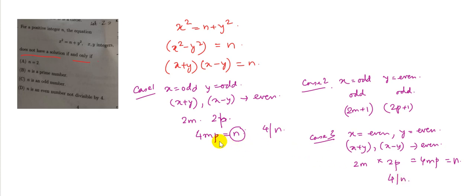So that means if n is an even number but not divisible by 4, that case is not possible. If n has to be an even number, which happens in case 1 and case 3, then in both cases n has to be divisible by 4. Therefore, option D is not possible. So it will not have a solution if n is an even number but not divisible by 4.